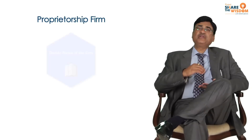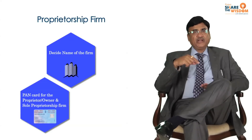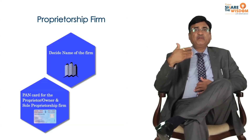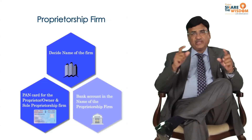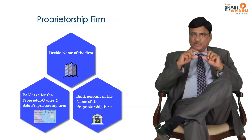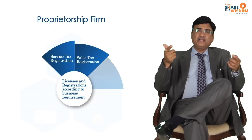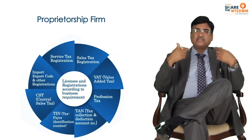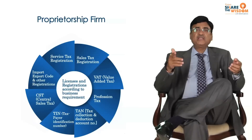In case of a proprietary concern, what you need is to give a name to that business. You apply for a permanent account number, which you may already have as a proprietor — if not, apply for your PAN. With that PAN number, you open a bank account in the name of your proprietary business with your name as proprietor, and obtain all other permissions and licenses such as service tax registration, sales tax registration, VAT registration, profession tax, and so on.